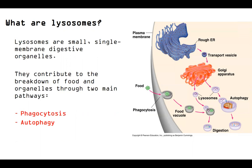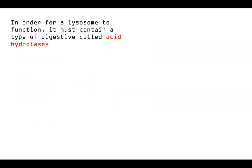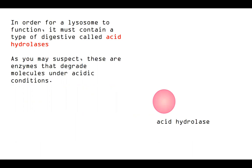So a lot of different functions for the lysosome. And again, we've mentioned this in previous video, it's largely going to participate in breaking things down through hydrolysis types of reactions. In order for a lysosome to function, it must contain a type of digestive enzyme called acid hydrolases. So here's our acid hydrolase. And as you may suspect, these enzymes degrade molecules when they're in acidic conditions. In order to work, these guys have to function at a low pH.